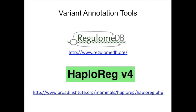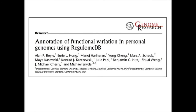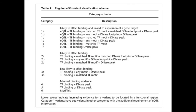These are two tools from ENCODE groups. The first is RegulomDB from Mike Cherry and Mike Snyder's labs. This tool gives you a score for how likely a variant is to disrupt transcription factor binding, based on different lines of evidence that overlap your variant of interest — such as whether it's been annotated as an eQTL, whether it overlaps a transcription factor binding site, or whether it overlaps a DNase peak. The lower your score and the higher the letter, the more likely it is to affect transcription factor binding.